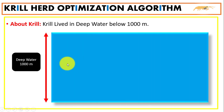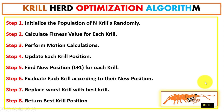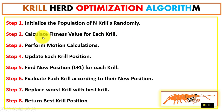Krills are found in the deep ocean, living below 1000 meters, with a lifespan of 6 to 10 years. The Krill Herd Optimization algorithm has eight steps. In the first step we initialize the population of N krills randomly, and in the second step we compute the fitness value for each krill.